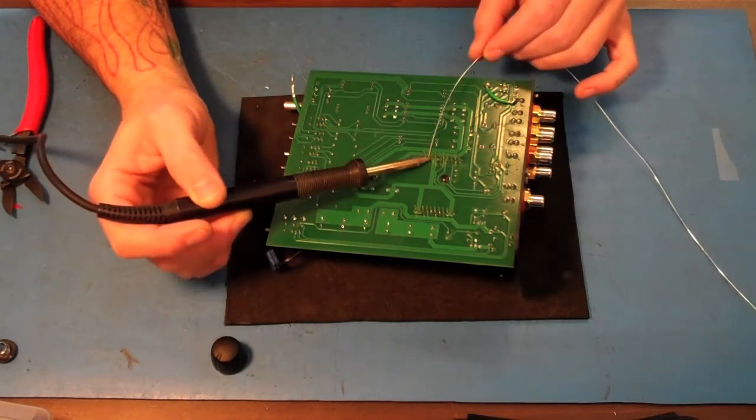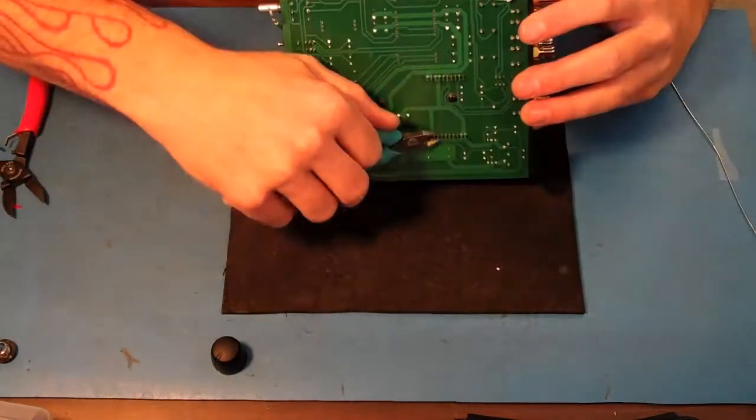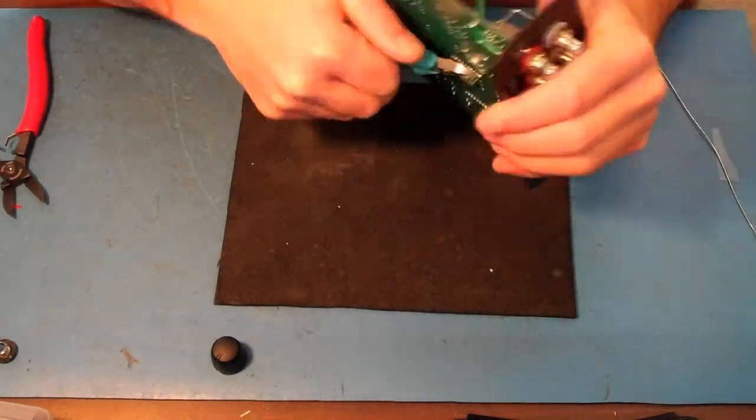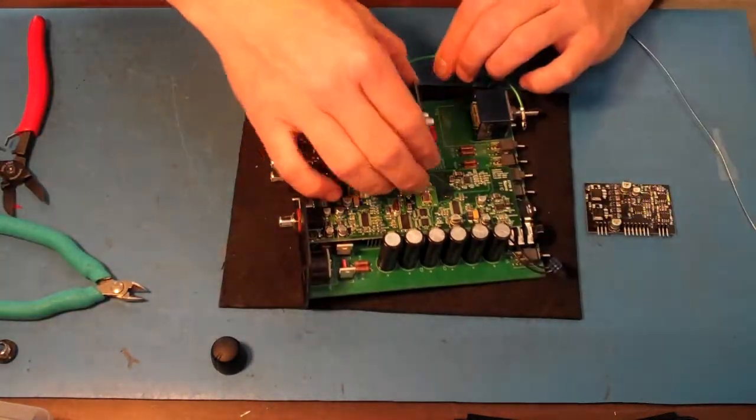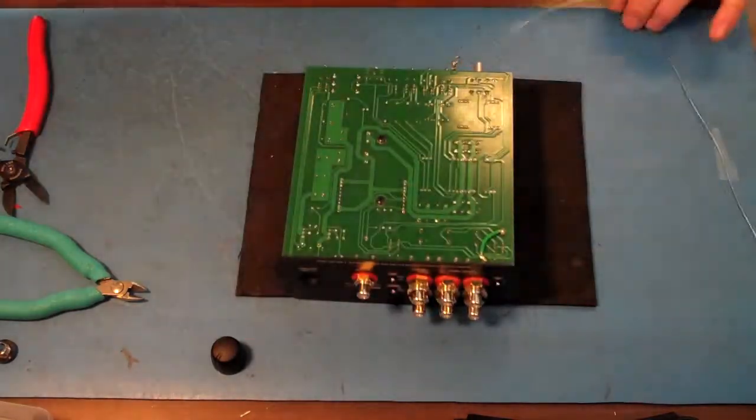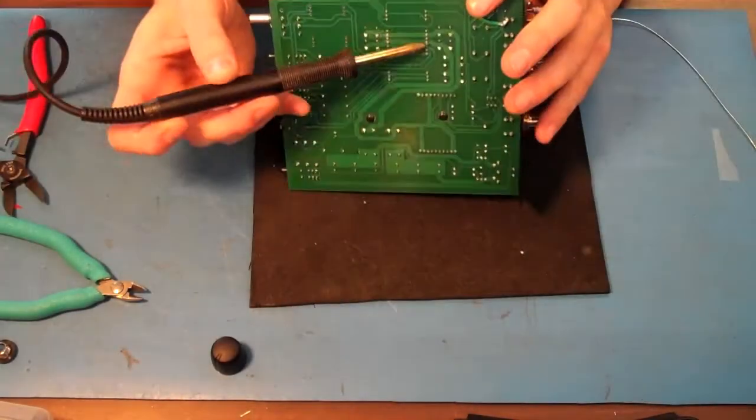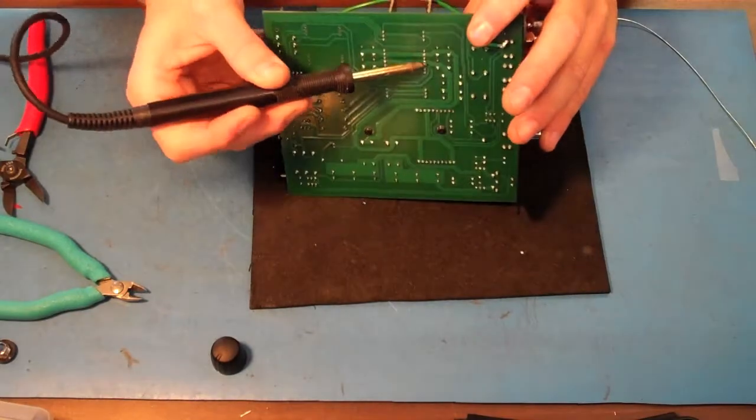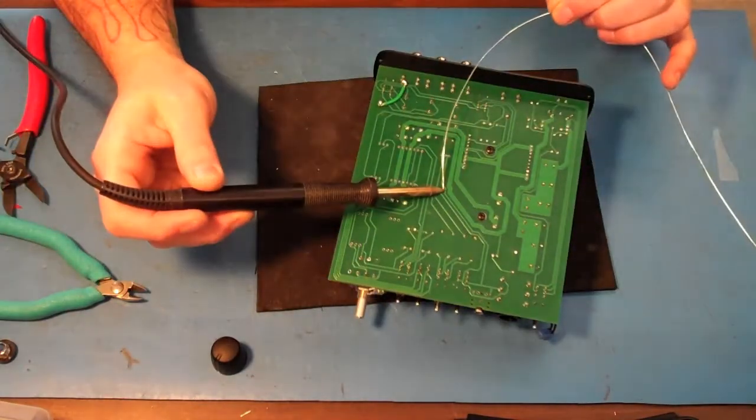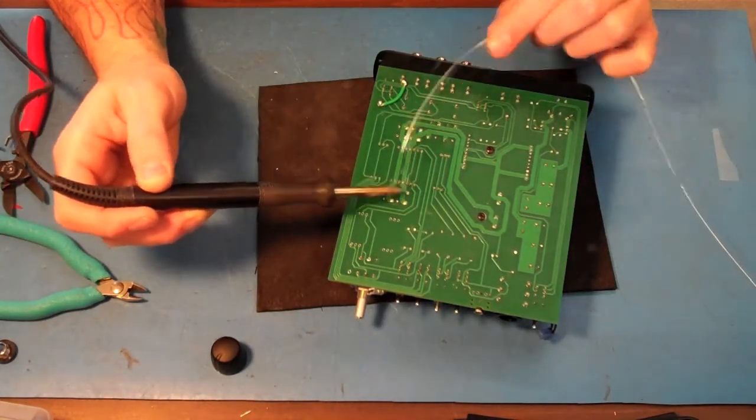So now he's soldering that DAC board on. Right, now it's nice and straight. Looks good. Cut the legs off. It's perfect. So now he's throwing the modules in, the max modules with the 627 op amps in them, as well as the DAC. The DAC also has the 627s.